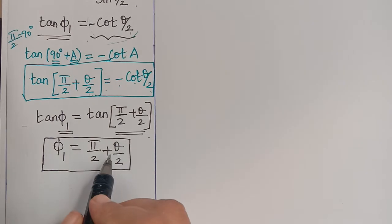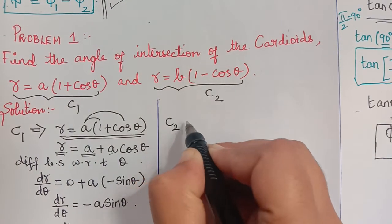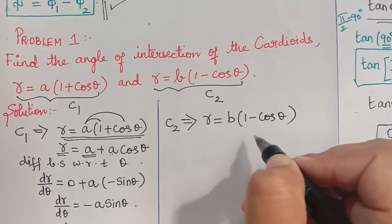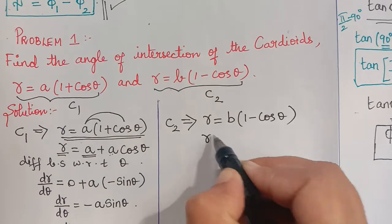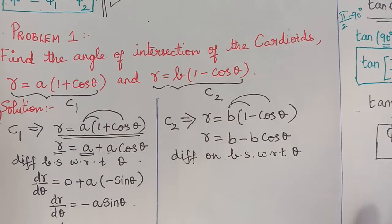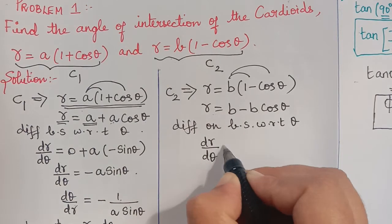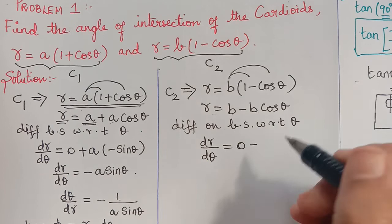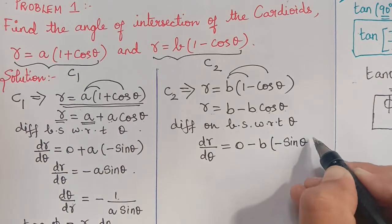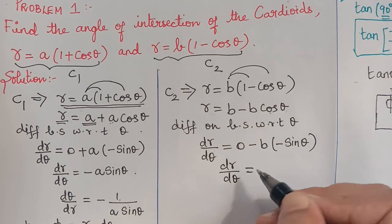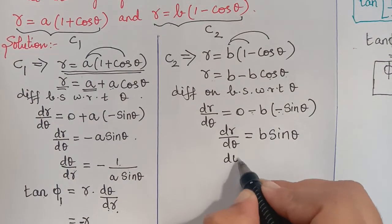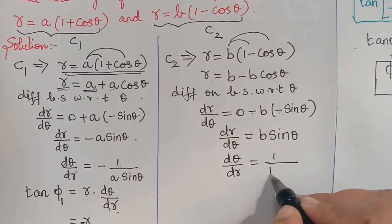Now to evaluate phi2 we consider curve C2, which is r = b(1 − cos theta). We rewrite this as b − b·cos(theta). Differentiating both sides with respect to theta: dr/dθ = b·sin(theta), since the derivative of −cos(theta) is sin(theta). Therefore dθ/dr = 1/(b·sin theta).